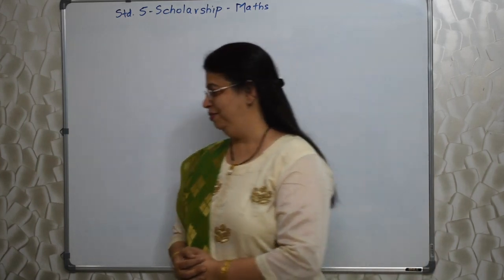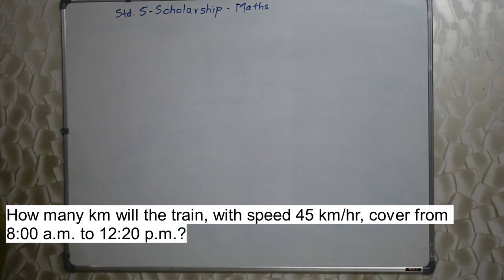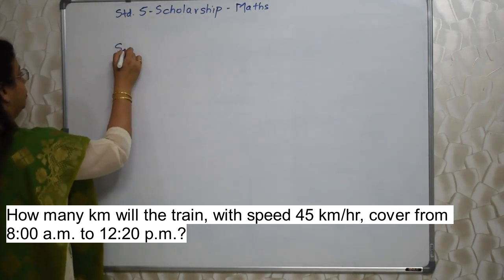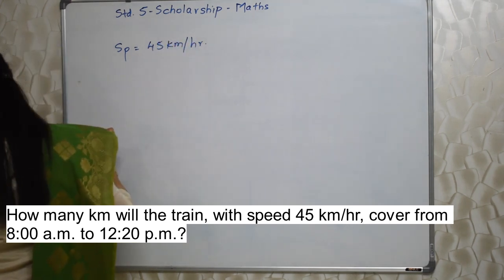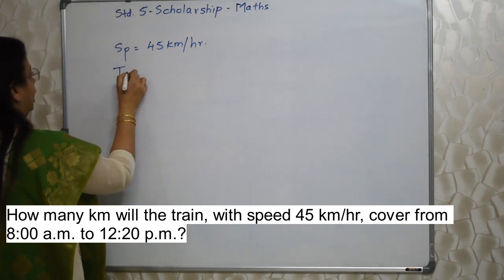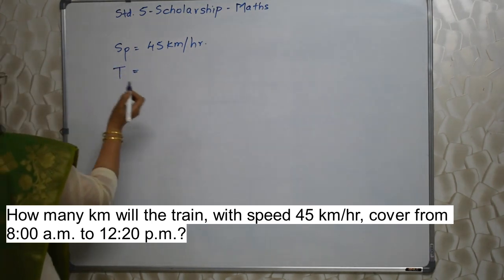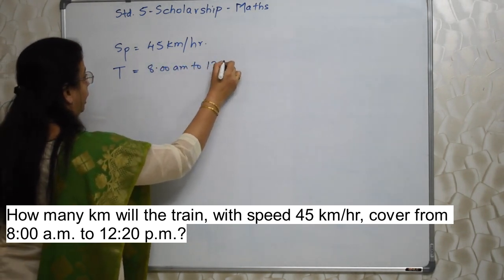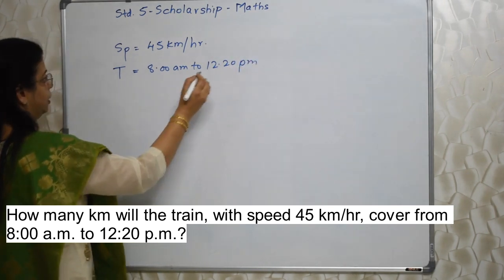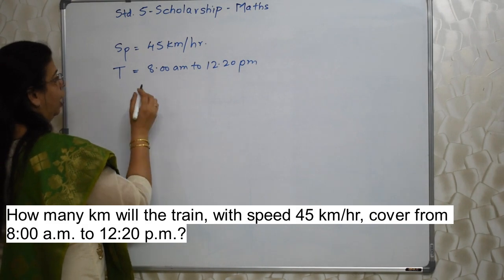First sum will appear on your screen. How many kilometers will the train with speed 45 kilometers per hour cover from 8 a.m. to 12:20 p.m.? The speed is 45 kilometers per hour. And what is the time here? Time means from 8 a.m. to 12:20 p.m. How much is the time span here?